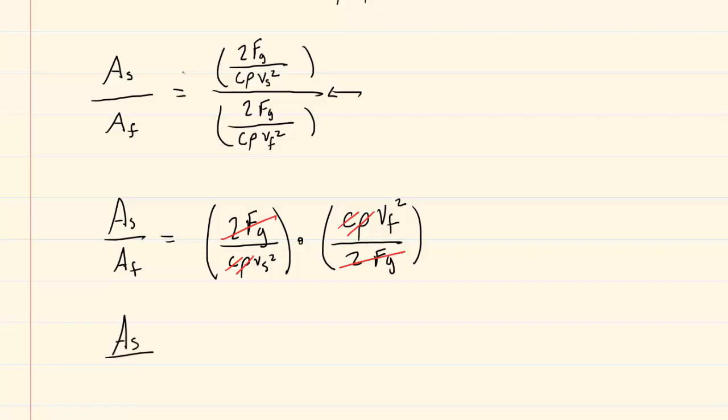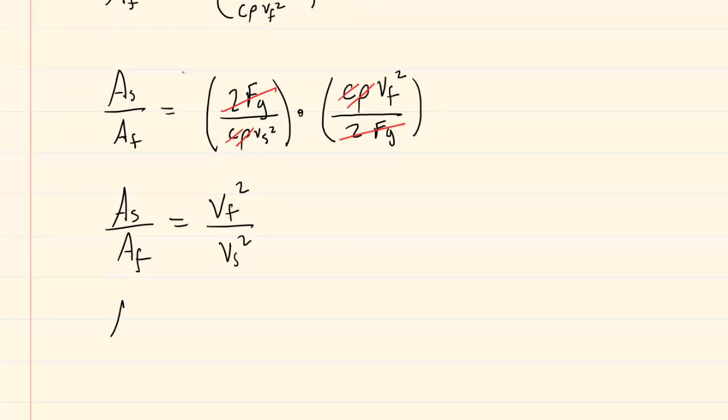Once you clean this up, you have the ratio of the area at the slower speed to the area at the faster speed equal to the faster terminal velocity squared over the slower terminal velocity squared. You can simplify this one more time by writing that as vf over vs and then the whole quantity squared.